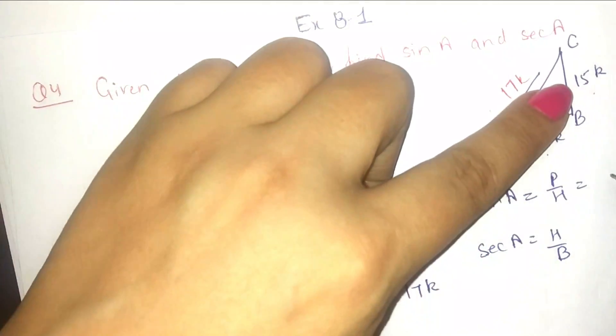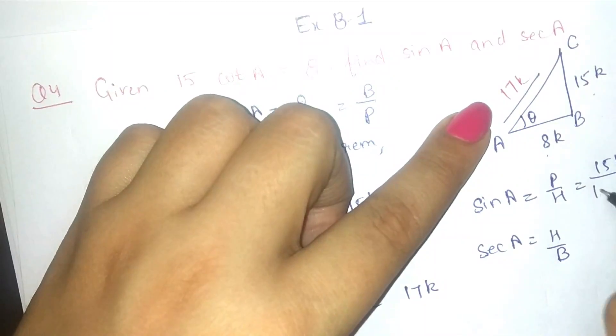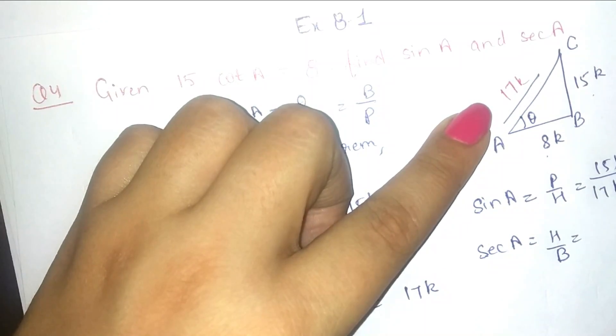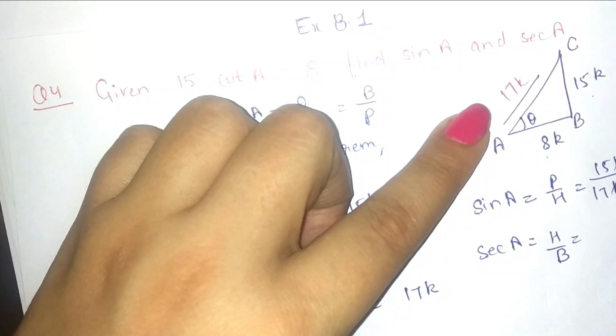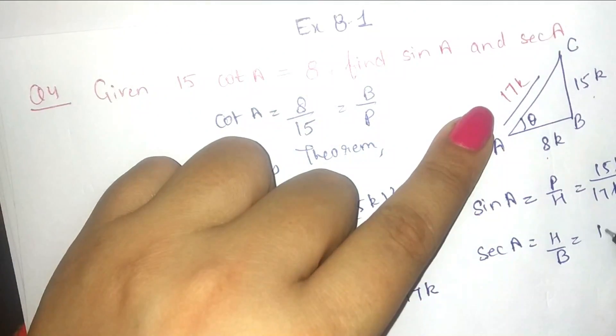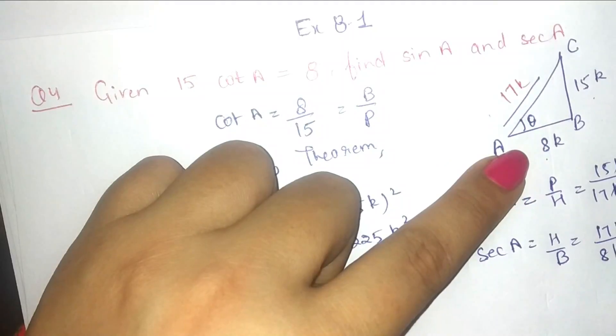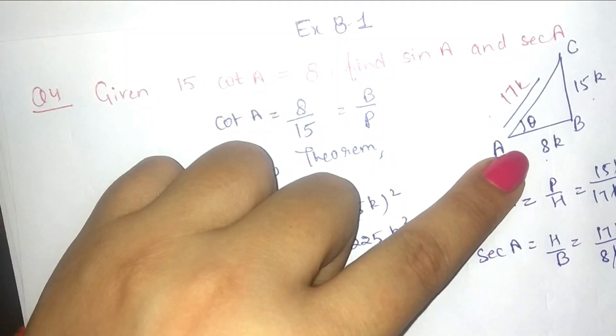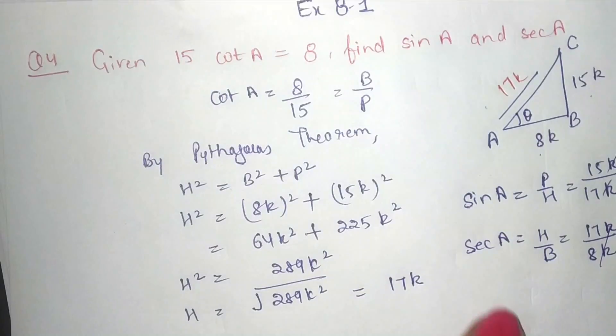We have perpendicular 15k, hypotenuse of 17k. K can cancel, so answer is 15 upon 17. Sec A meh hypotenuse hai 17k, base is 8k. K cancel ho jayenge, 17 upon 8 is the value of sec A.